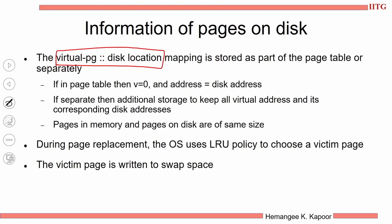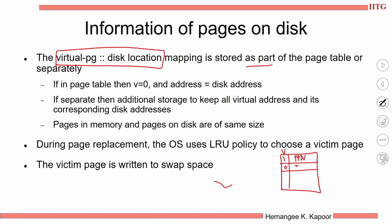You could maintain the disk location mapping separately or as part of the page table. If maintained as part of the page table: the page table has a valid bit. If this valid bit is 1, you get the physical page number. If this valid bit is 0, the page is not present in the RAM — so I can use that space to store the disk location. This is how we can integrate the two pieces of information together.